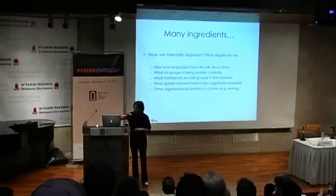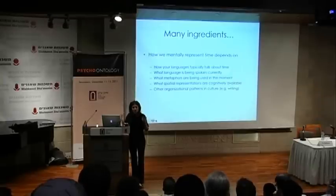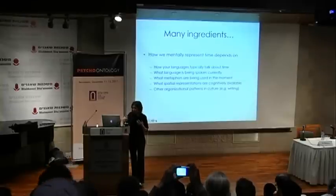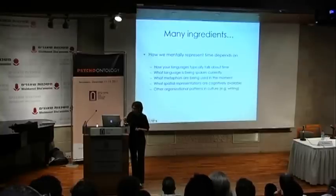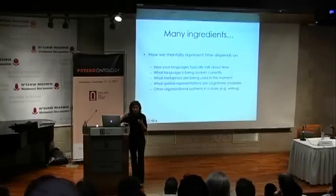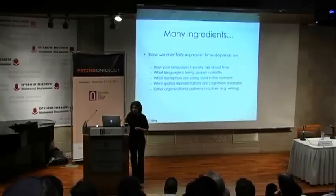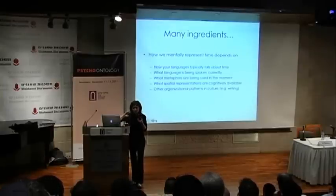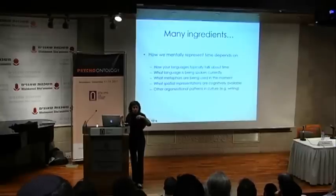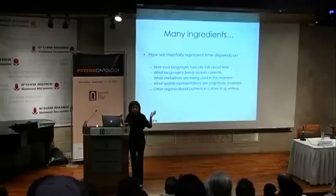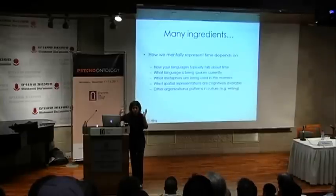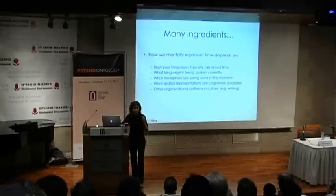Across many studies, we found quite a few ingredients that go into how an individual constructs an idea of time in the moment: how your language typically talks about time; what language you're currently speaking if you're bilingual; what metaphors you're using in the moment; and what spatial representations are cognitively available. We also have a study with hemispatial neglect patients who can't attend to the left side of space — they end up not being able to attend as well to events in the past and instead try to cram everything into the future when told about events on a timeline.